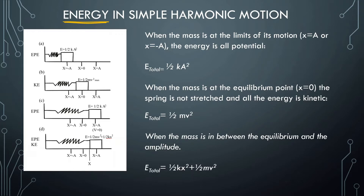When the mass is at its limits of its motion, meaning it's at the amplitude — x is equal to A or negative A, as we can see in scenario A and scenario C — during both of these points, all of the energy is elastic potential energy. So it's equal to one-half kx squared, or one-half kA squared, A symbolizing the amplitude.